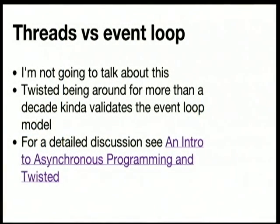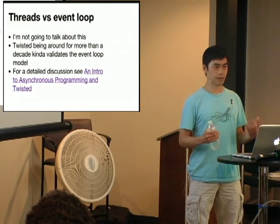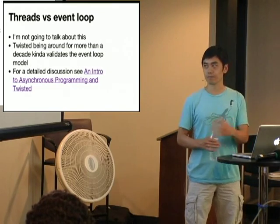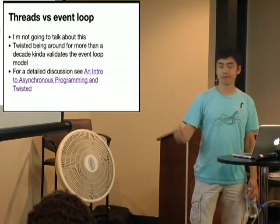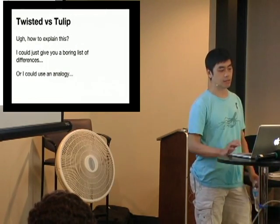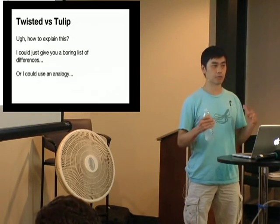There's been a huge debate that's raged for decades now about threads versus event loop. I'm not going to talk about it—that's not the subject of my talk. Twisted being around for so long kind of more or less justifies that the event loop is a basically good idea. I am interested in telling you about the differences between Twisted and Tulip.